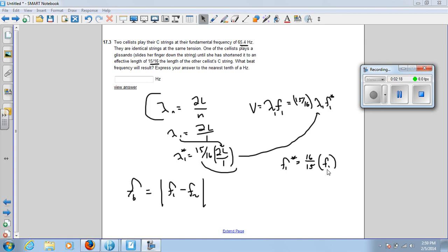That will give you the value of her frequency, and that's really the same thing as f2. So put in 65.4 hertz here, put in the result of 16 fifteenths of that here, and you'll get the correct beat frequency.